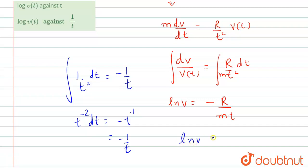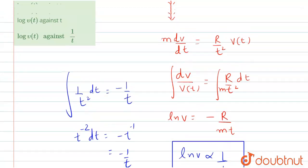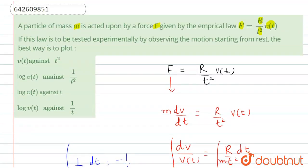So it is clear ln V is inversely proportional to t. The plot of log V against 1 upon t will be a straight line because it is directly proportional to 1 upon t and inversely proportional to t. So this will be right, ln V against 1 upon t. Hence option D is right.